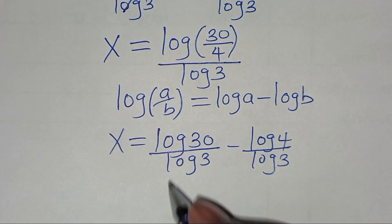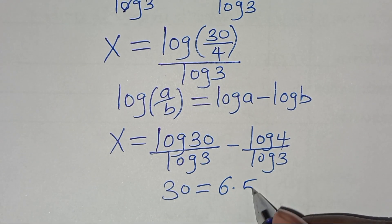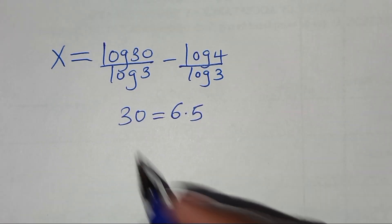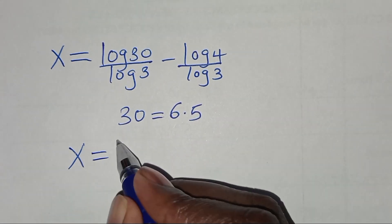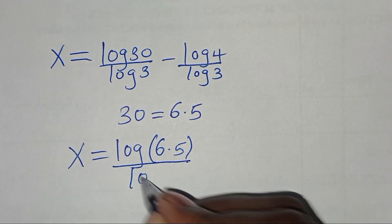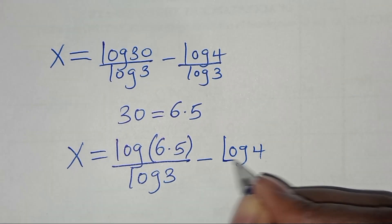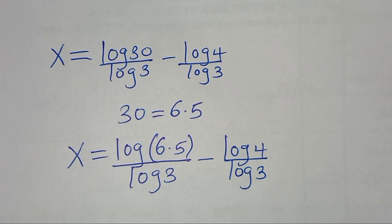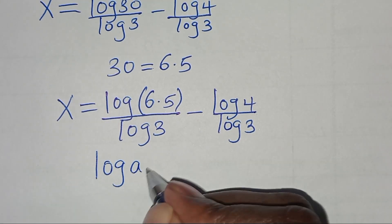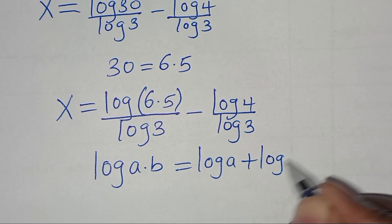The next step: we can express 30 as 6 times 5, so let's substitute that. We have x equal to log(6 times 5) divided by log 3, subtract log 4 divided by log 3. Now log(6 times 5) is in the form of log(A times B), which we can express as log A plus log B.